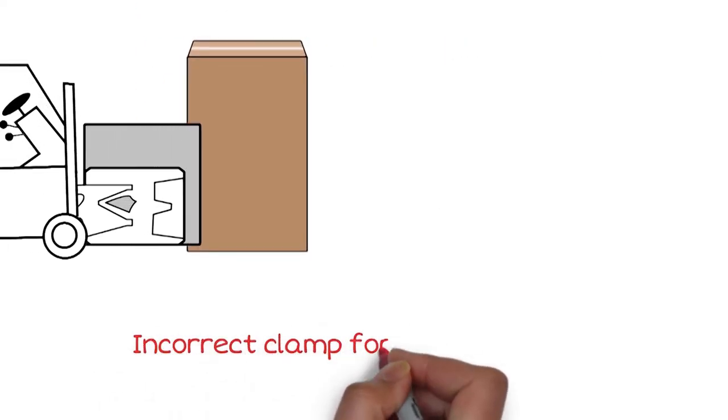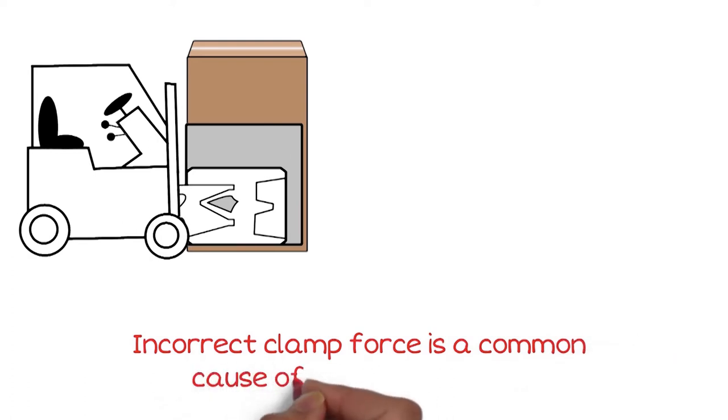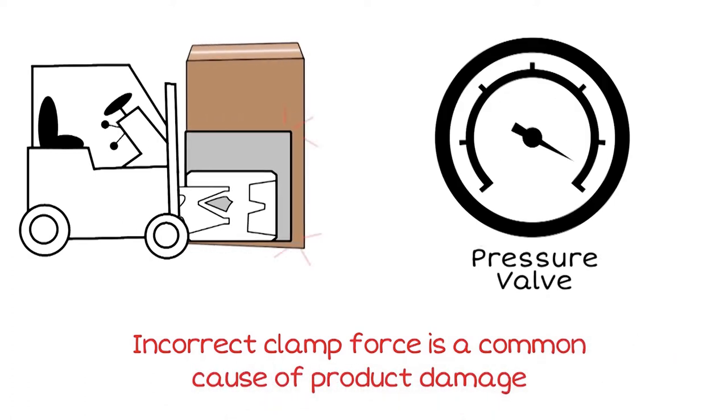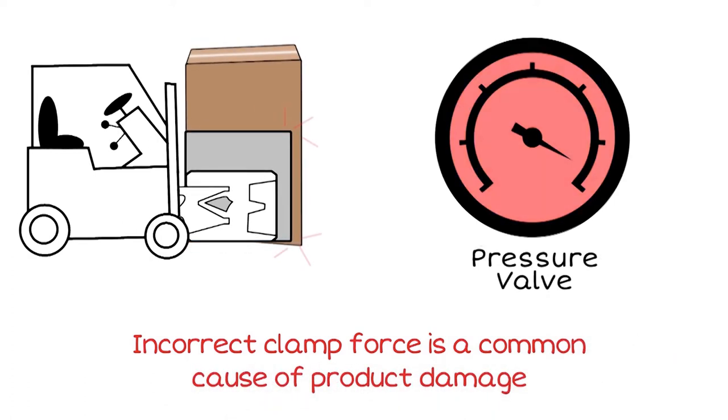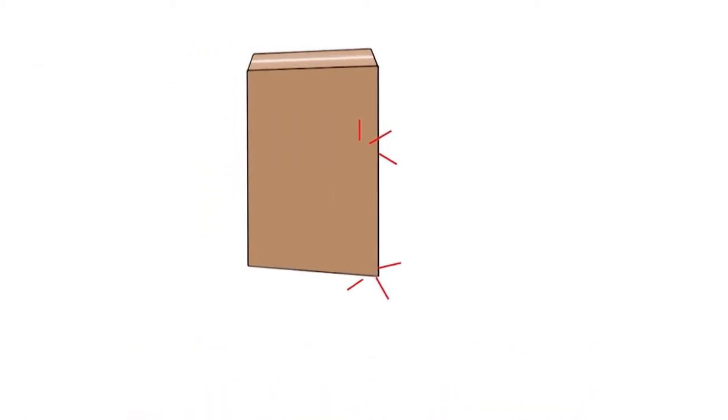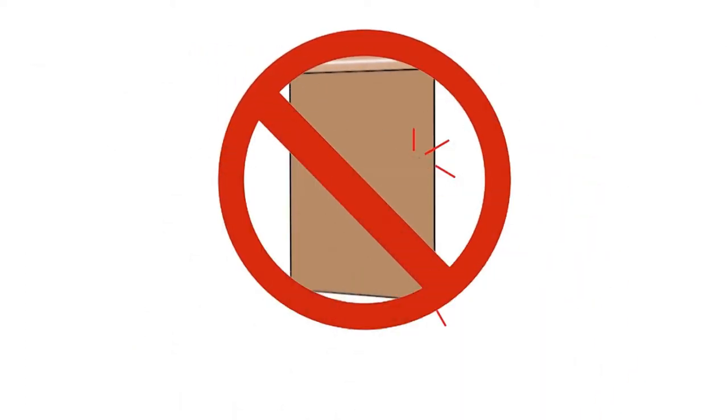Incorrect clamp force from too much or too little hydraulic pressure is a common cause of product damage. Product loss due to damage is costly and inefficient. How can you maintain speed and accuracy when handling while reducing product damage?